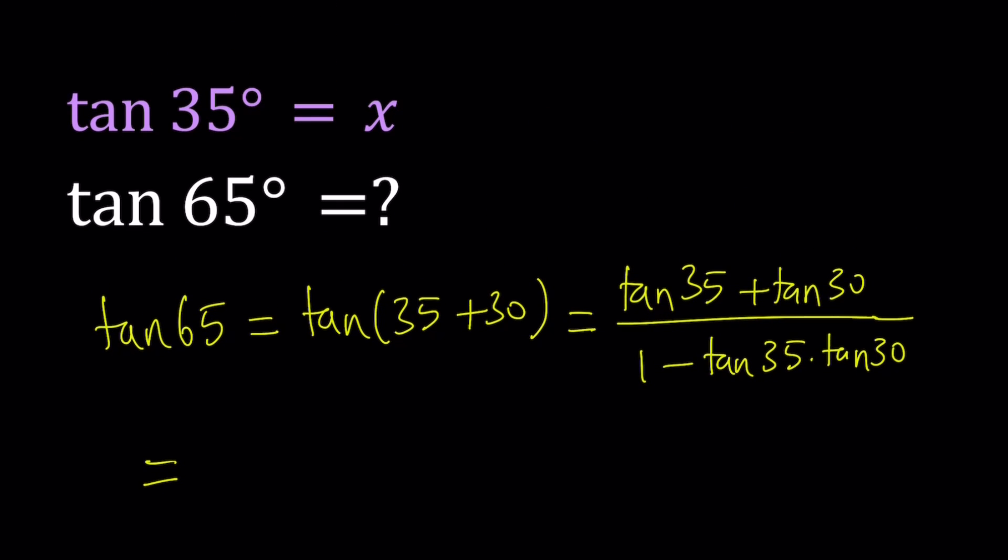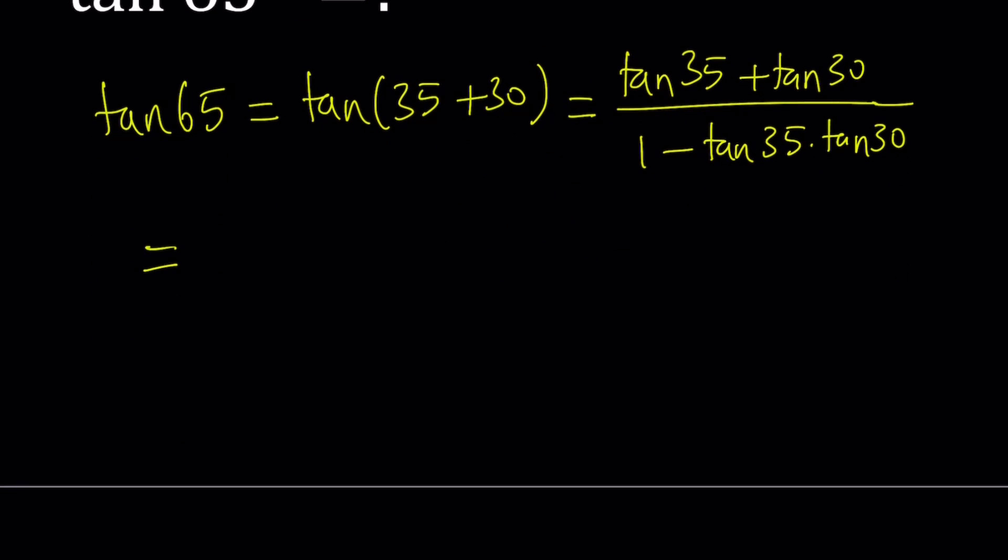Tangent 35 is given as x, so I can just go ahead and plug it in. And tangent 30 happens to be 1 over square root of 3, or you can write it as root 3 over 3. And the same thing at the bottom, you get x times root 3 over 3. Awesome. Is that the answer? Let's simplify a little bit.